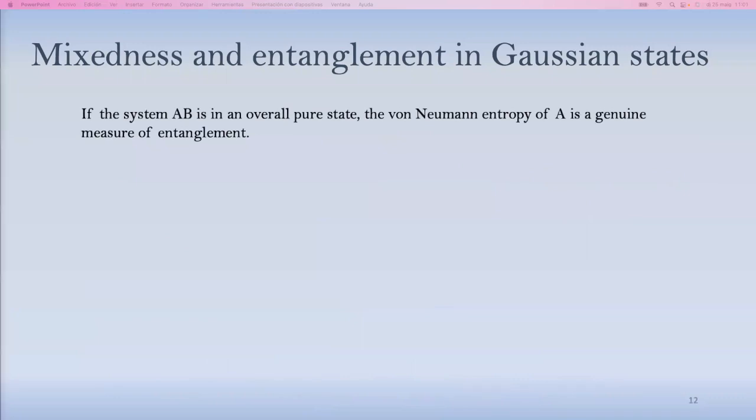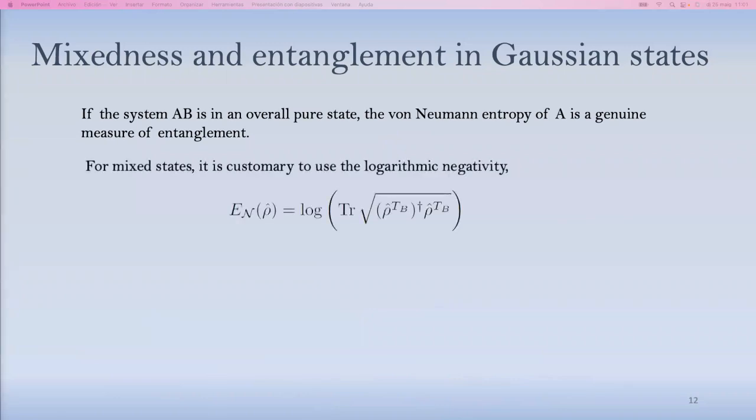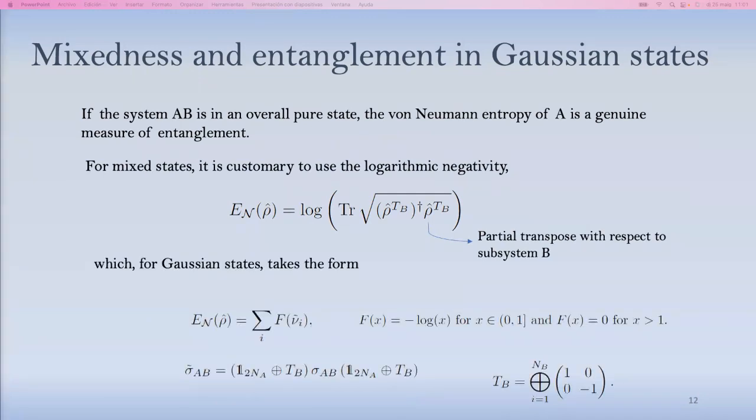For subsystems in an overall pure state, the von Neumann entropy of subsystem A is a genuine measure of entanglement. For mixed states, it is customary, and we approach this using the logarithmic negativity, which is defined as the log of the trace norm, or the one norm of the partial transpose with respect to subsystem B, the original state. For Gaussian states, this reduces to a nice expression that again, only depends on the symplectic eigenvalues, this time of the covariance matrix version of partial transpose, which is to invert the momenta of one of the subsystems.